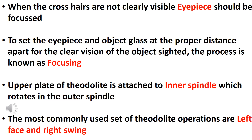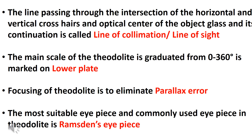The eyepiece and object glass are attached to the inner spindle which rotates in the outer spindle. The line passing through the intersection of the horizontal and vertical crosshairs and the optical center of the object glass, and its continuation, is called the line of collimation or line of sight.